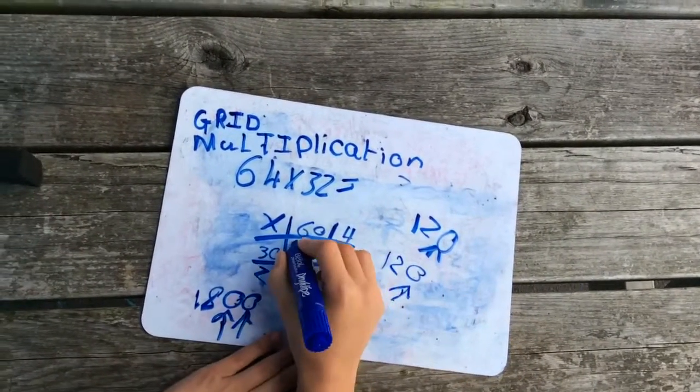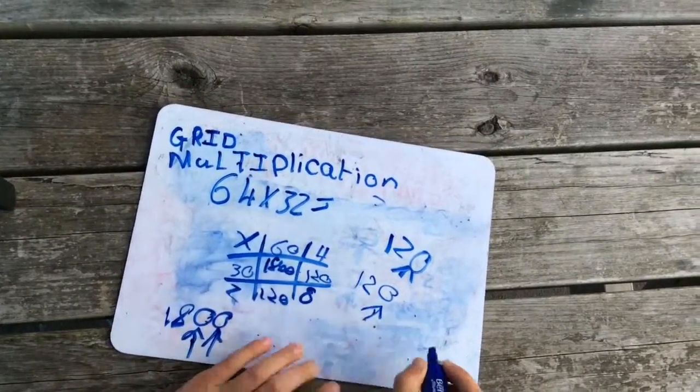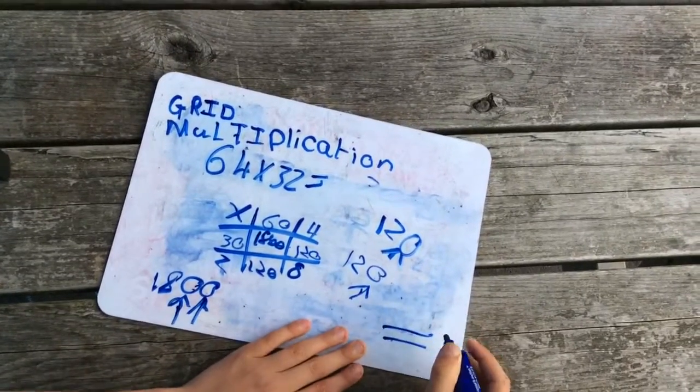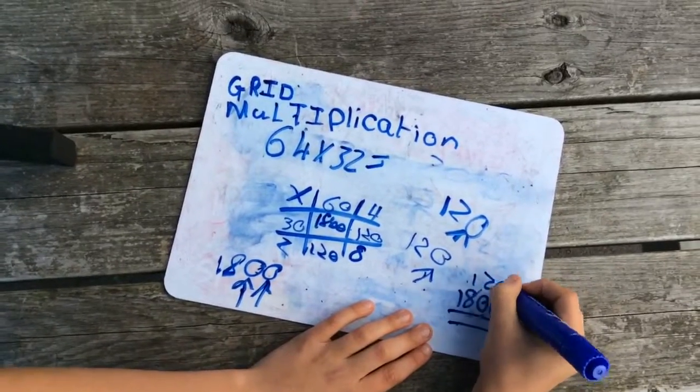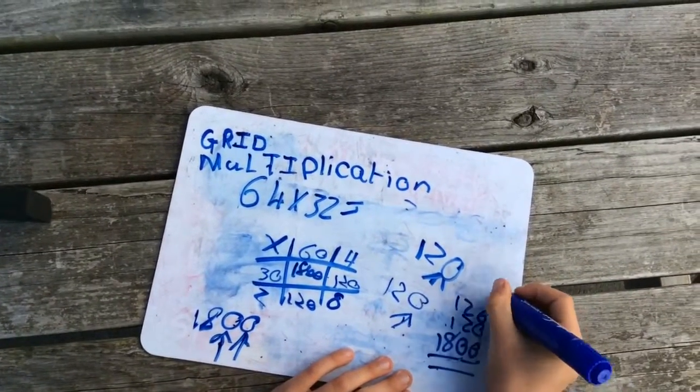So next all you need to do is add them up. So first of all you put your 1,800, 120, 120 and 8.